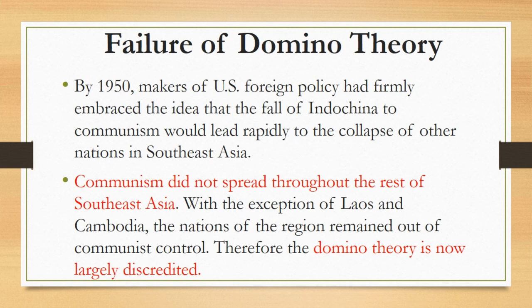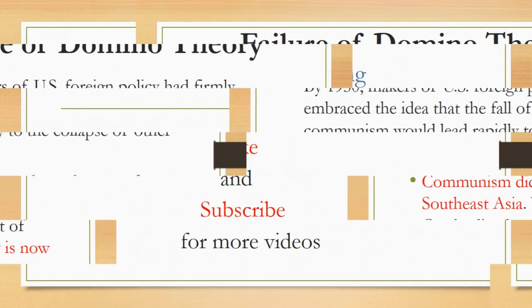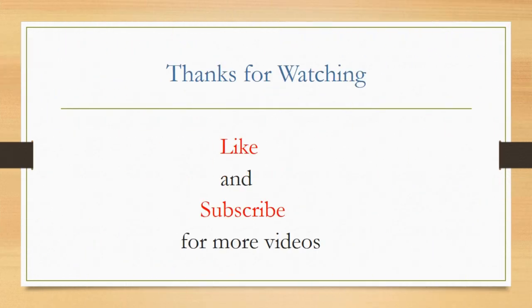In the end, even though the American effort to block a communist takeover failed and North Vietnamese forces marched into Saigon in 1975, communism did not spread throughout the rest of Southeast Asia. With the exception of Laos and Cambodia, the nations of the region remained outside communist control. Therefore, the Domino Theory is now largely discredited, and it has been proven that nations are not like dominoes.